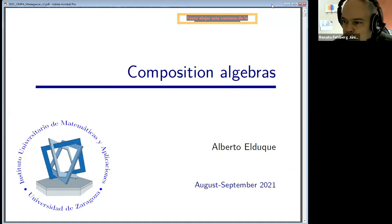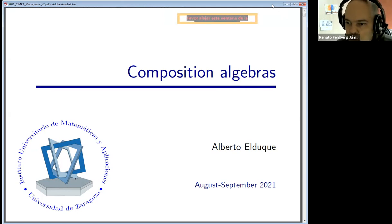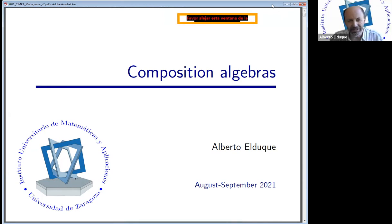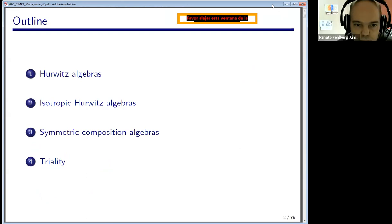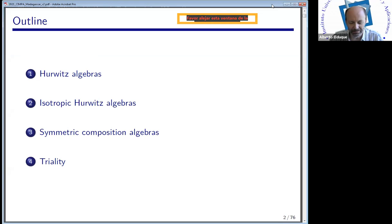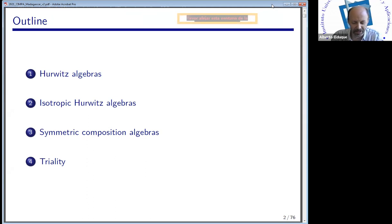Welcome everyone to this afternoon session. Let's start the fourth lecture of this course about composition algebras. So these days we were dealing with Hurwitz algebras — these are the unital composition algebras — and we proved that essentially they all can be described using the Cayley-Dickson doubling process, the same process used by Hamilton to get quaternions from complex numbers, and later by Graves and Cayley to get octonions from quaternions.